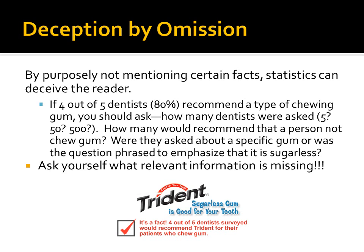Another way you can be deceived with statistics is called deception by omission. By purposely not mentioning certain facts, statistics can deceive the reader. If four out of five dentists — which is 80% — recommend a type of chewing gum, you should ask: how many dentists were asked? Five? Fifty? Five hundred? Five thousand? How many would actually recommend that a person not chew gum? Were they asked about a specific gum, or was the question phrased to emphasize that it is sugarless? You have to ask yourself what relevant information is missing from this statistic.